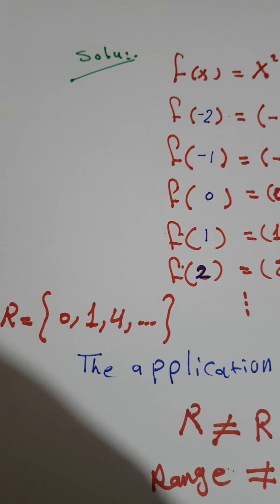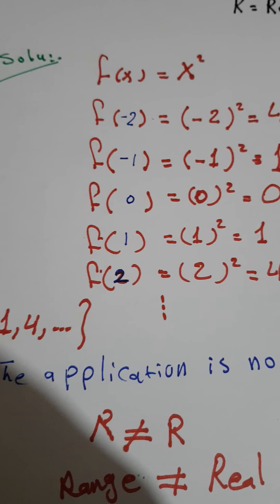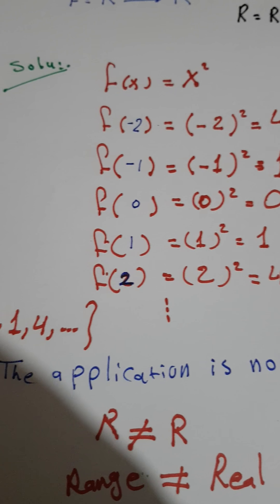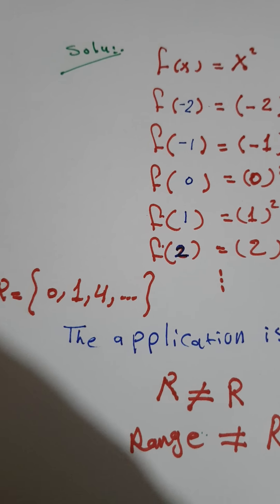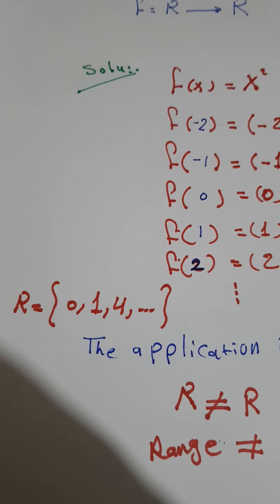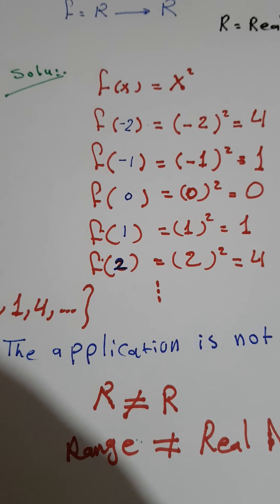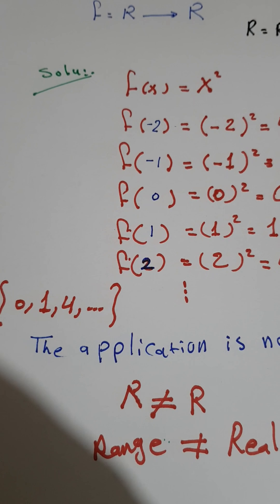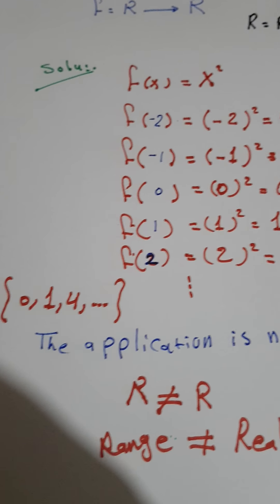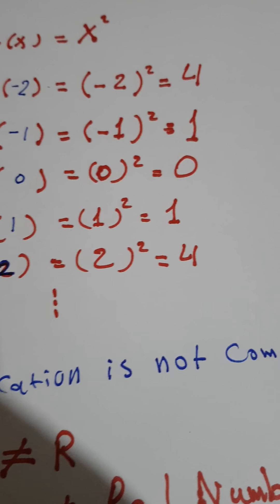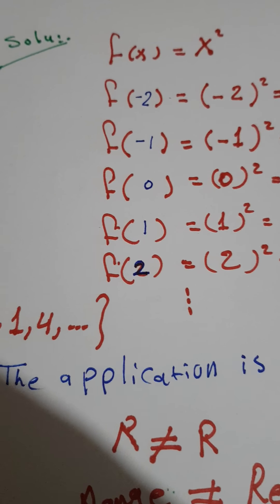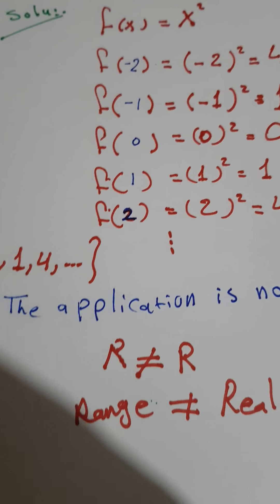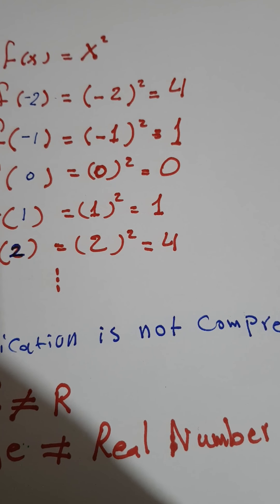For example, we got 4 twice and 1 twice, so we take each only once. The range equals {0, 1, 4, ...} and so on — these are infinitely many values. The result: the application is NOT surjective, because the range is not equal to ℝ.